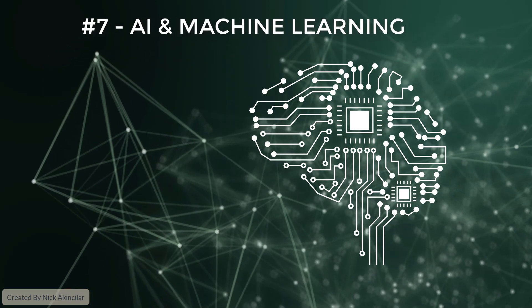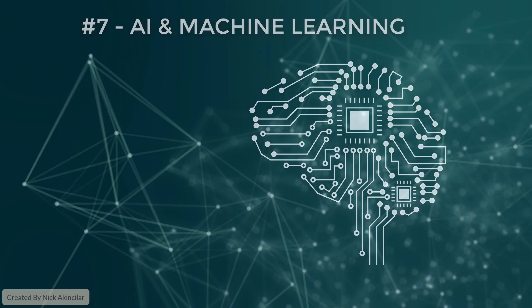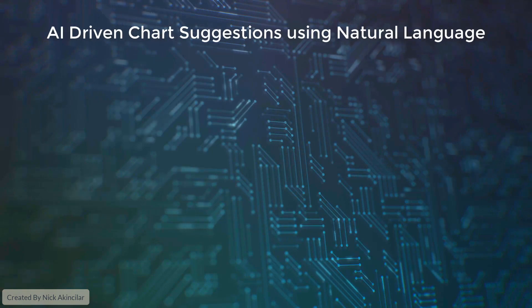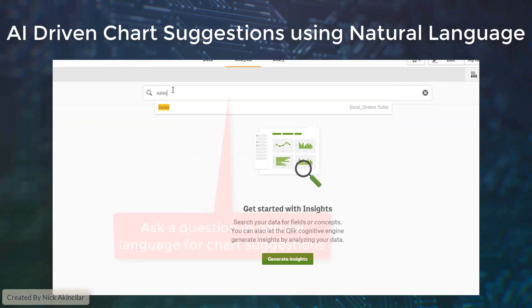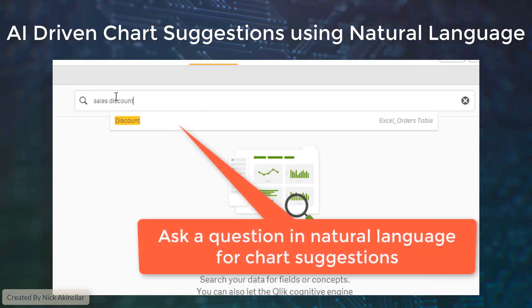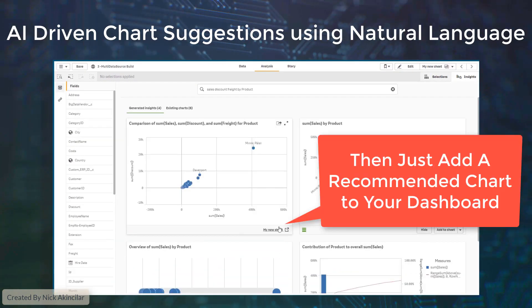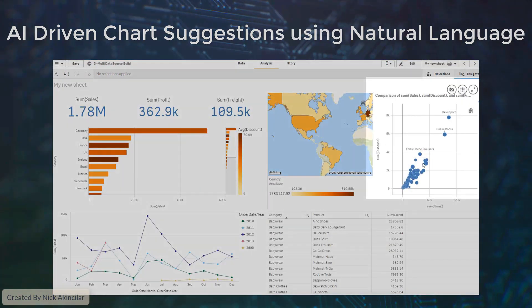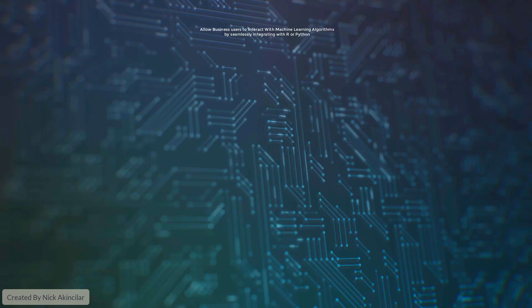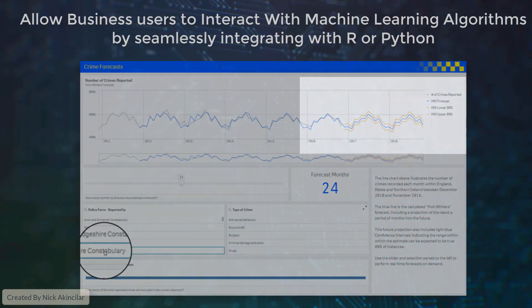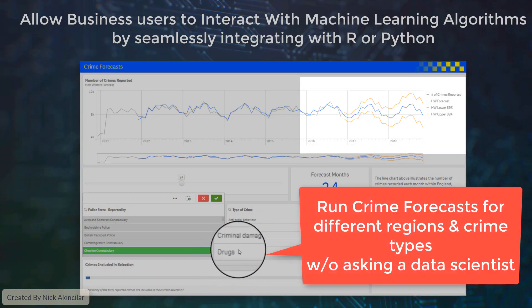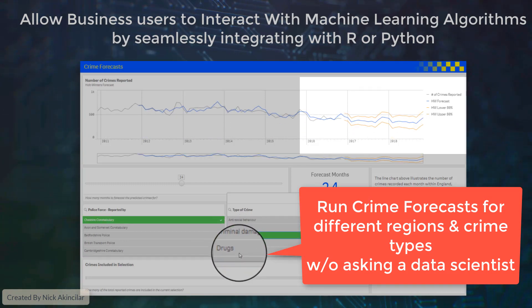Number seven: augmented intelligence and machine learning. These capabilities are used in different ways throughout the platform. The first implementation is in our insights board, where users can ask business questions using natural language, and AI will suggest and create visualizations to be added to their dashboards. Another way machine learning is utilized is to integrate advanced statistical and ML packages such as R and Python seamlessly into our dashboards.